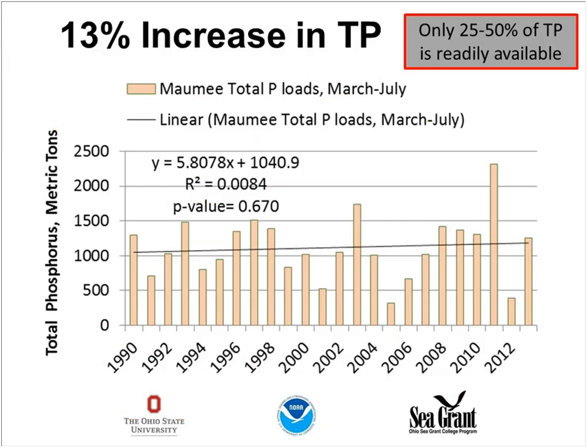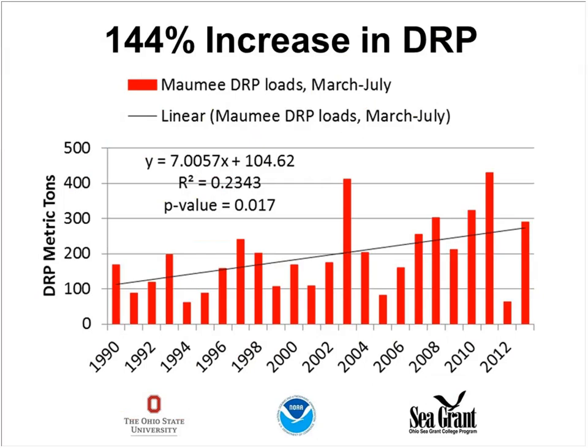I want to talk about the difference between TP — total phosphorus — and DRP — dissolved reactive phosphorus. Total phosphorus is a measure of all the phosphorus in the water, and only about 25% to 50% of that phosphorus is actually readily available to those blooms. The graph shows total phosphorus on the vertical axis and time on the x-axis, with only about a 13% increase in total phosphorus from 1990 to present. But if you compare that to DRP, the phosphorus more readily available to blooms, we're seeing a 144% increase from 1990 to 2012.